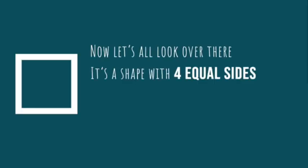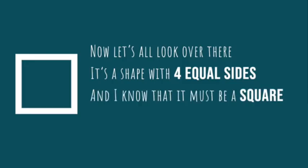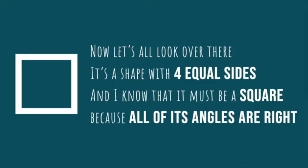Now let's all look over there — it's a shape with four equal sides. And I know that it must be a square because all of the angles are right.